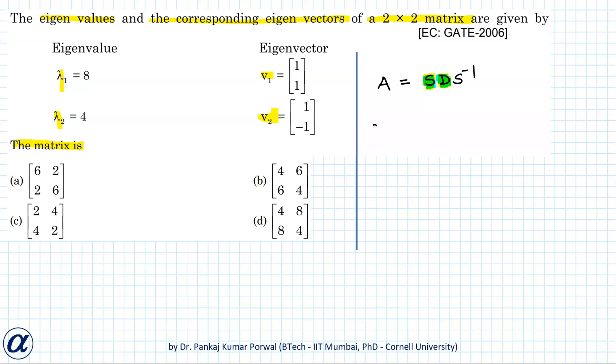So let's say S will be the first eigenvector 1, 1 and the second eigenvector 1, minus 1, then correspondingly D will be the first eigenvalue 8, second eigenvalue 4, and 0, 0. Now because S is a 2 by 2 matrix,